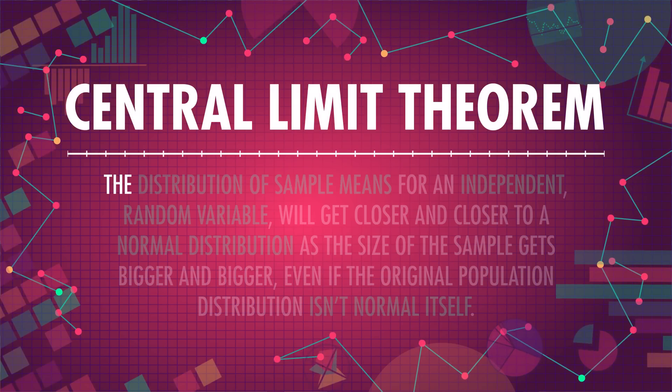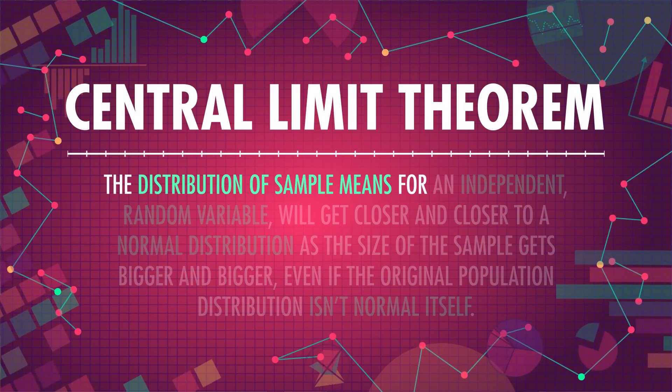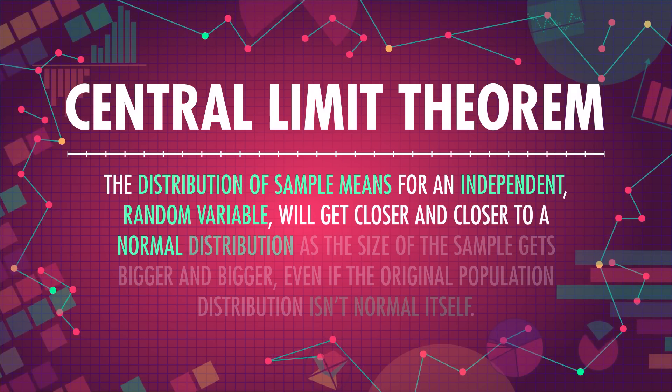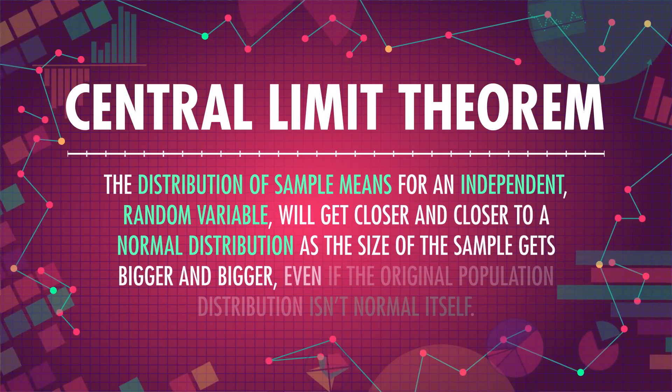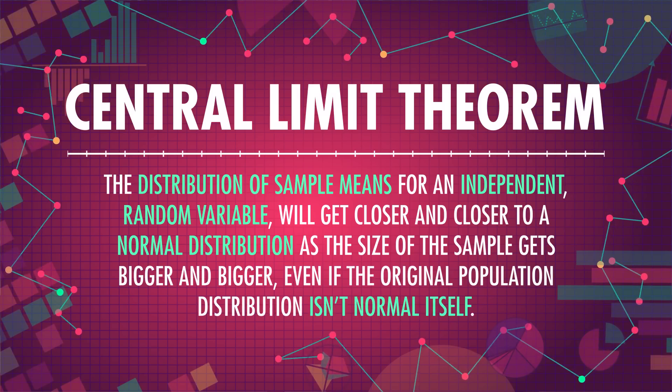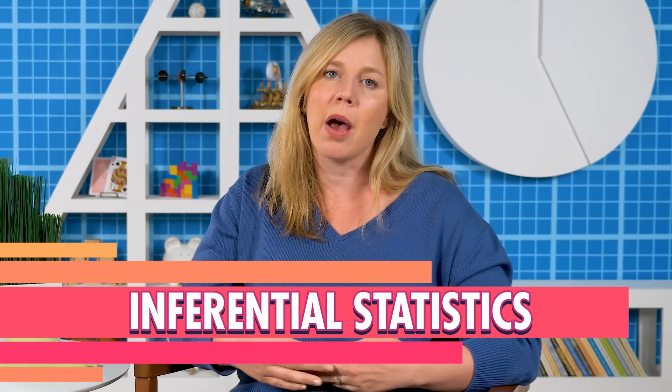The reason that sampling distributions are almost always normal is laid out in the central limit theorem. The central limit theorem states that the distribution of sample means for an independent, random variable will get closer and closer to a normal distribution as the size of the sample gets bigger and bigger, even if the original population distribution isn't normal itself. Many inferential techniques and statistics rely on the assumption that the distribution of sample means is normal, and the central limit theorem allows us to claim that they usually are.